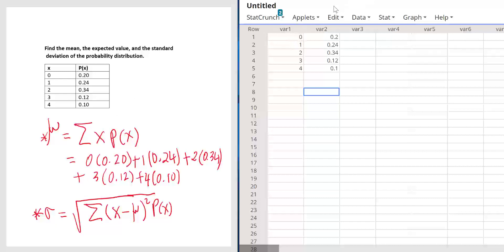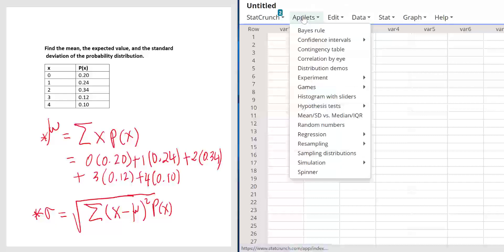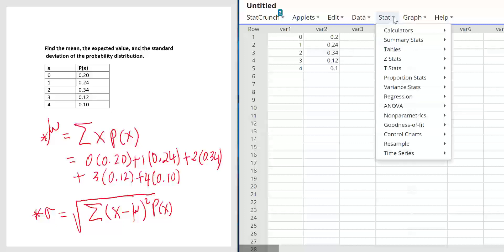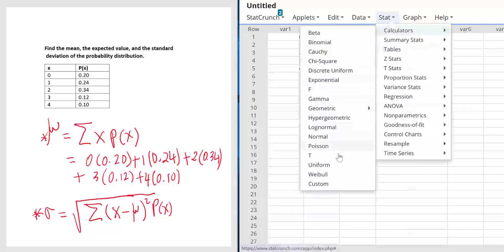Open StatCrunch. Go to StatCrunch.com. Log in using your MyStatLab username and password. Then in variable 1, enter the values of x. In variable 2, enter the values of p(x). Then go to Stat, Calculator, Custom.